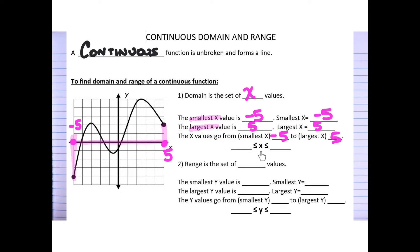Since we're talking about domain, x is in the middle of our inequality symbols. These symbols always face the same direction because the smallest x is always to your left and the largest x is always to your right — so this reads from negative 5 to positive 5, meaning the line touches every x value and every number in between.